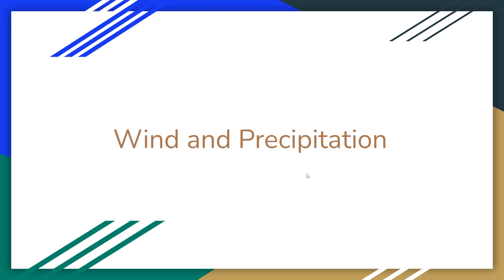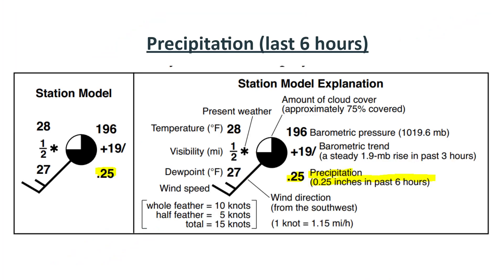Hi everyone, today we're going to talk about how station models represent wind and precipitation. So precipitation is anything that comes out of clouds. This can be snow, rain, hail, etc. And precipitation is represented by a number in the bottom right corner of your station model.